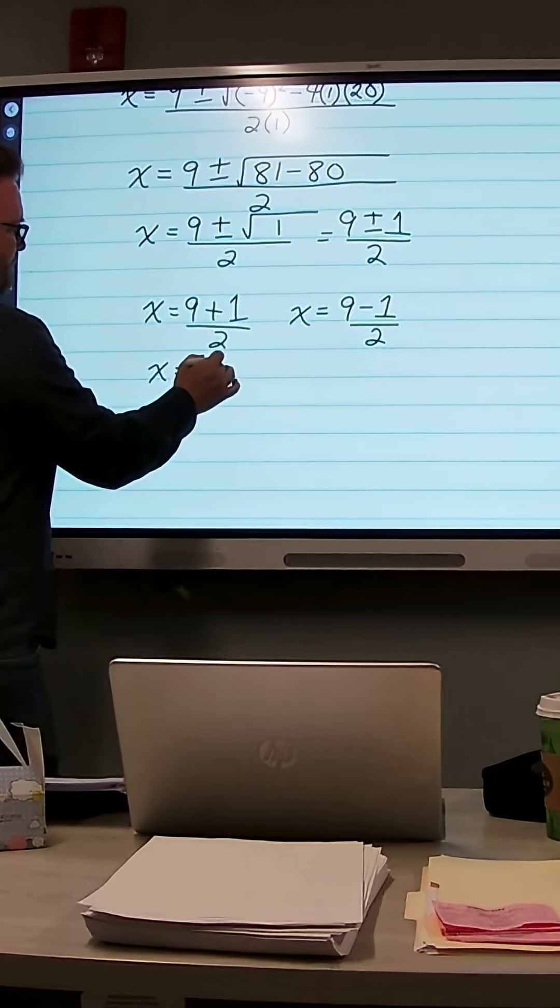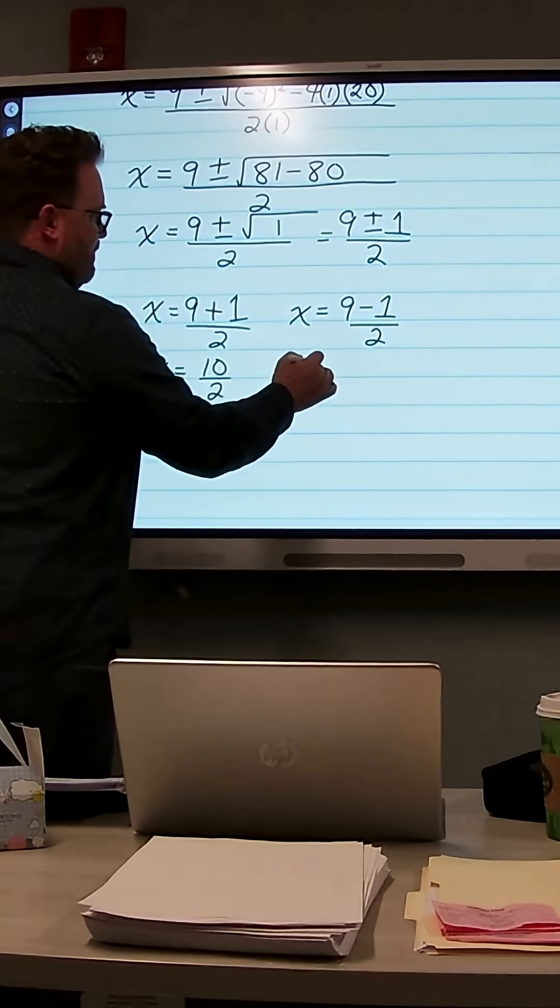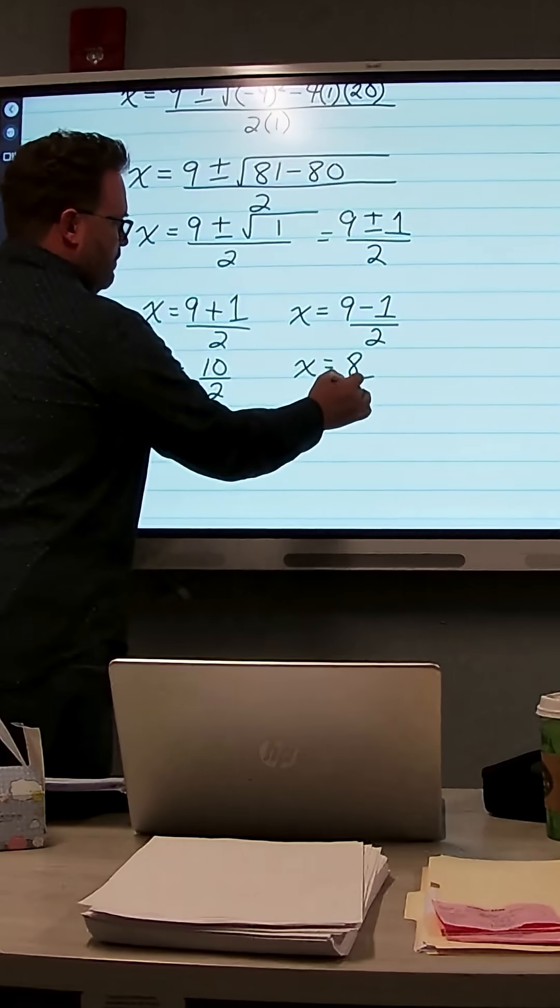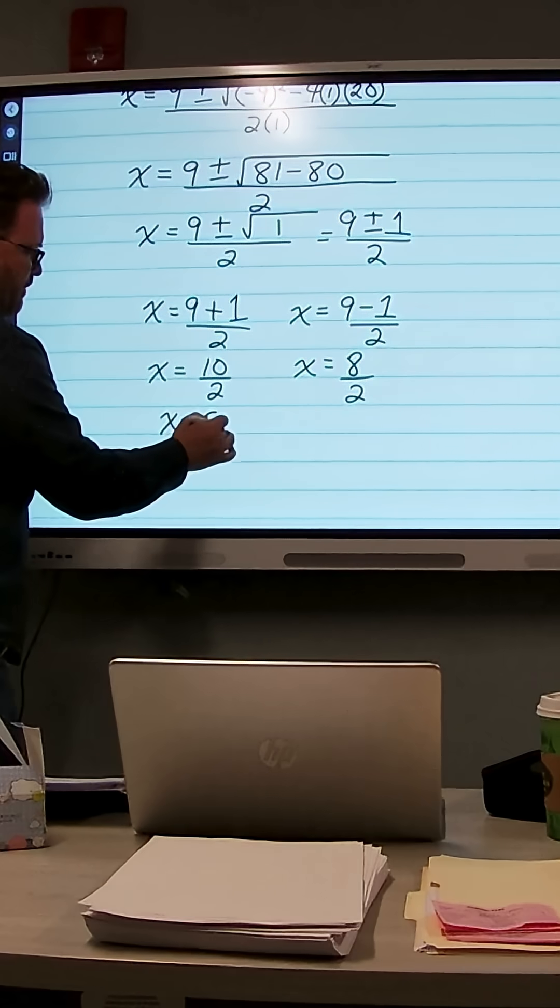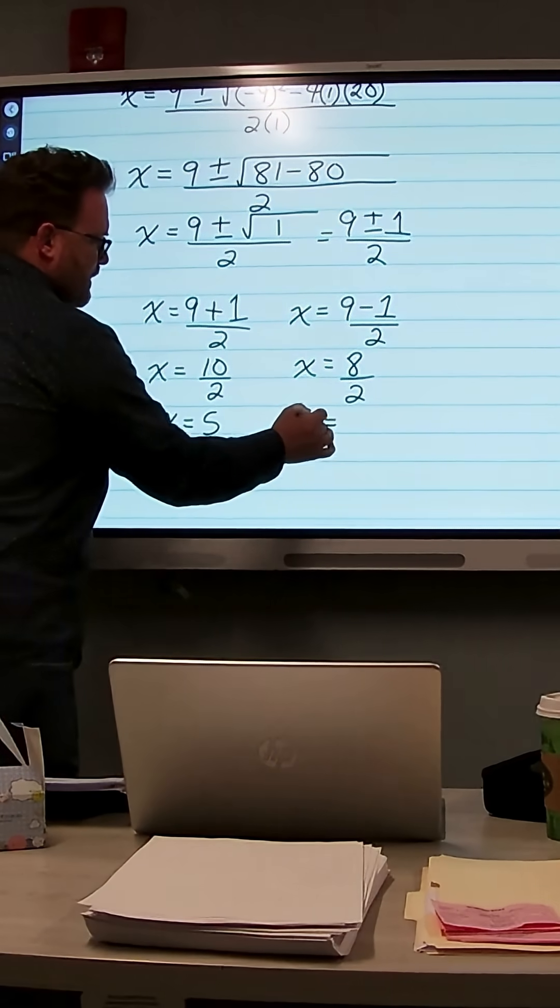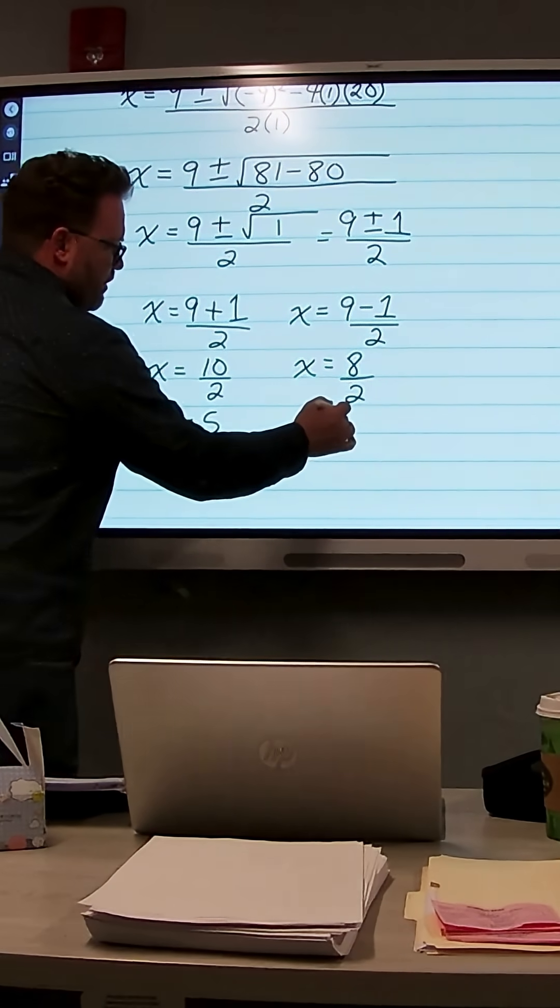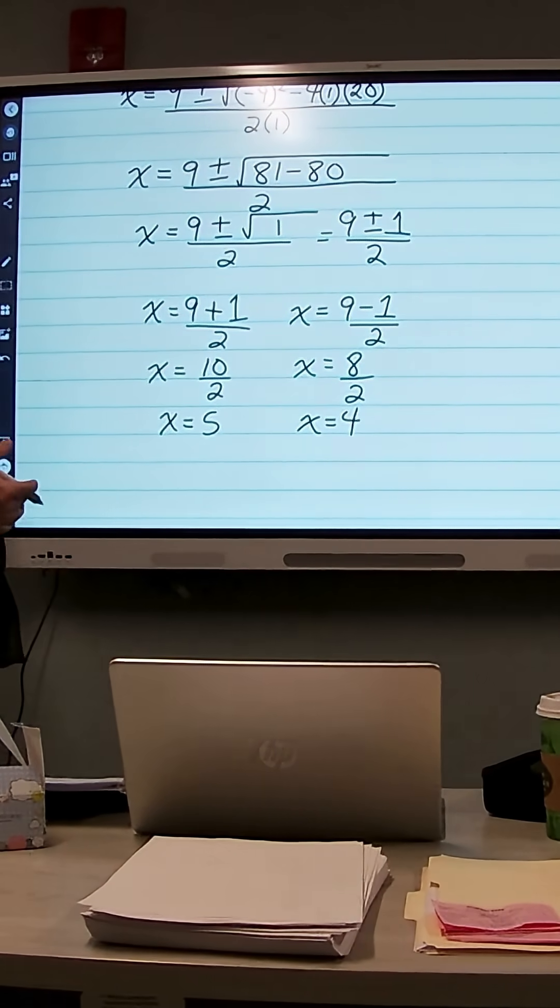9 plus 1 is 10, so we have 10 over 2. 9 minus 1 is 8, so we have 8 over 2. 10 divided by 2 is 5, so x equals 5 is one of our solutions. And then the other one is 8 divided by 2, which is 4. So our solutions are x equals 4 and x equals 5.